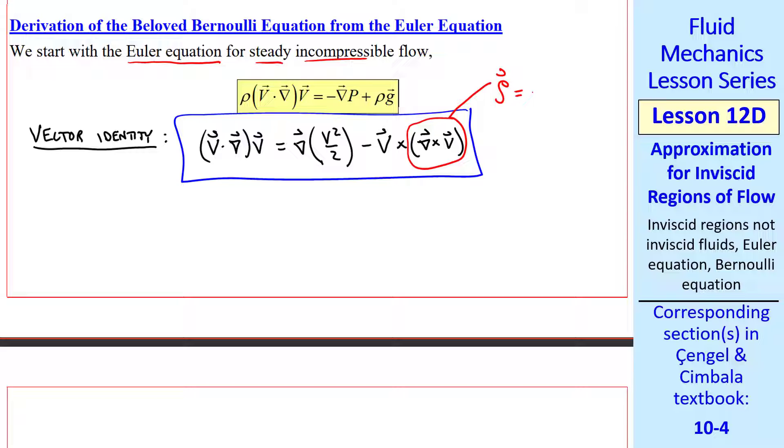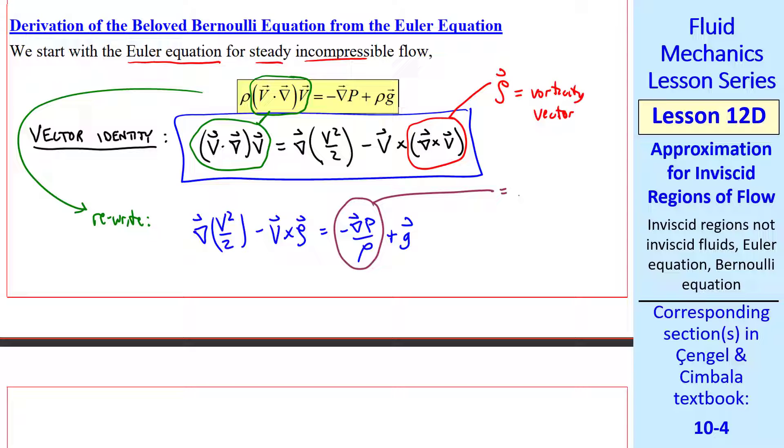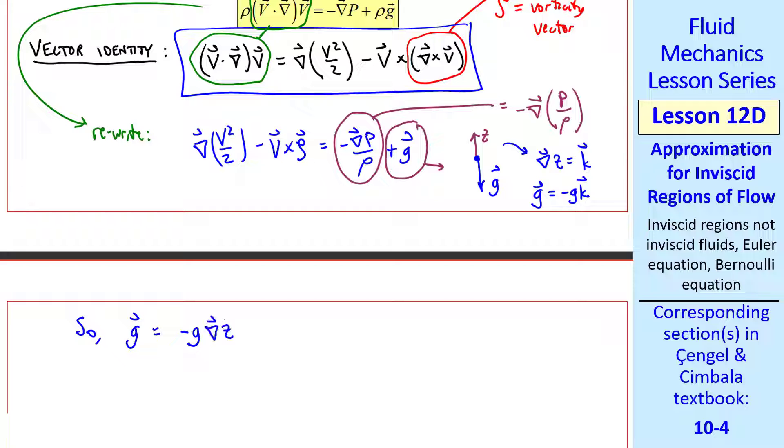But we recognize del cross v as the vorticity vector as discussed in a previous lesson. We use Greek letter zeta for vorticity. This grouping of terms is the same as this. So we rewrite this equation as del v squared over 2 minus v cross zeta equal negative gradient of p over rho plus g. Now I want to combine as many terms as I can in this gradient operator. This term can be written negative of the gradient of the quantity p over rho, since rho is constant for an incompressible flow. In the gravity term, when z is up and g is down, in Cartesian coordinates, the gradient of z is just unit vector k, and vector g is minus g in the k direction. So g can be written as minus g gradient of z, or minus the gradient of gz, since g itself is a constant.